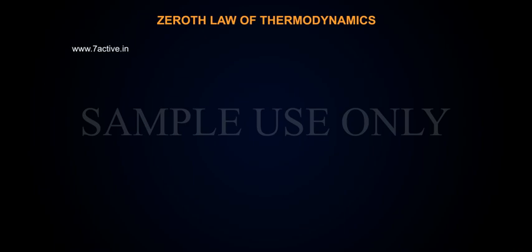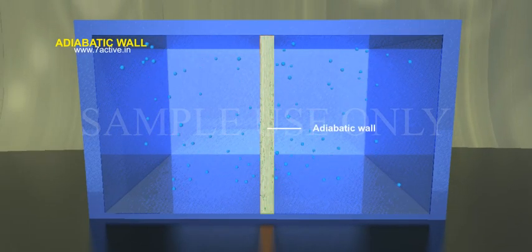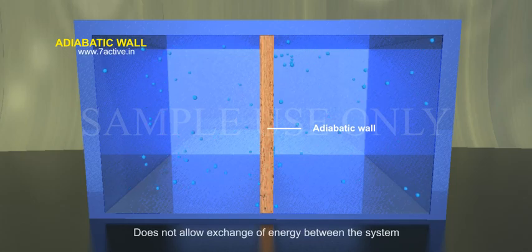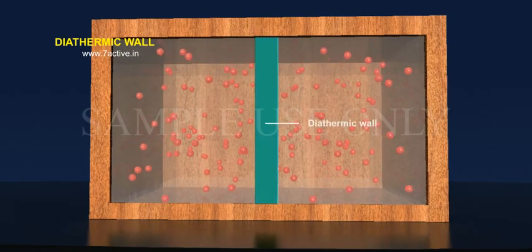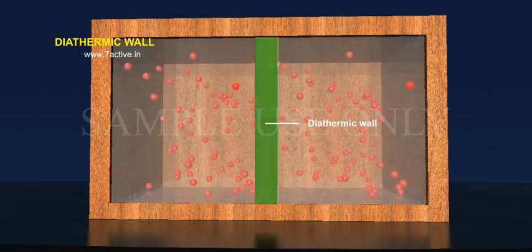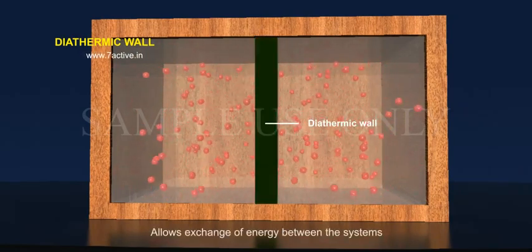Zeroth law of thermodynamics. An adiabatic wall does not allow exchange of energy between the system. Diathermic wall allows exchange of energy between the systems.